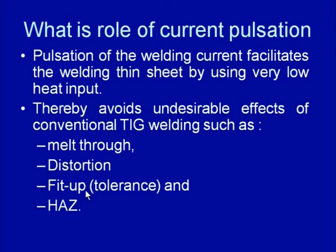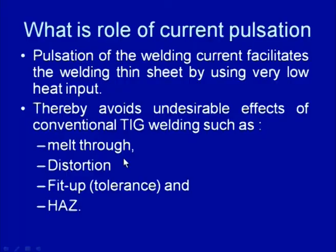If excessive heat is supplied, thin sheets melt immediately and the molten metal falls down during welding, leading to melt-through defects. Similarly, high heat generation causes differential expansion and contraction in the plates being welded. Due to poor rigidity and stiffness of thin plates, they tend to warp in different ways. There will also be problems with fit-up, tolerance control, and a wider heat affected zone due to excessive localization of heat over a greater distance.